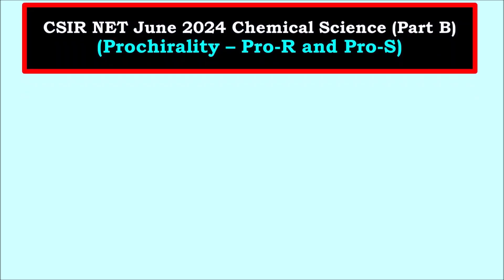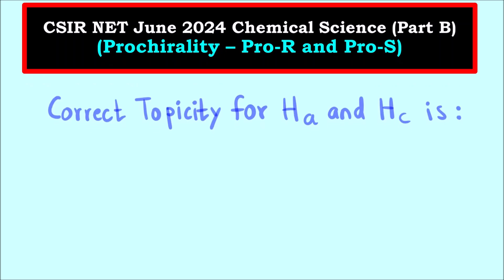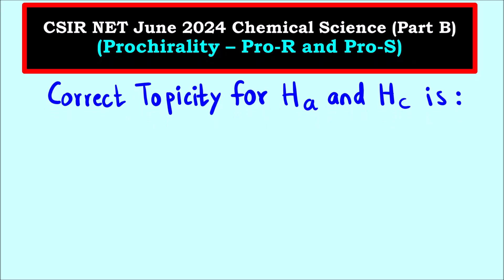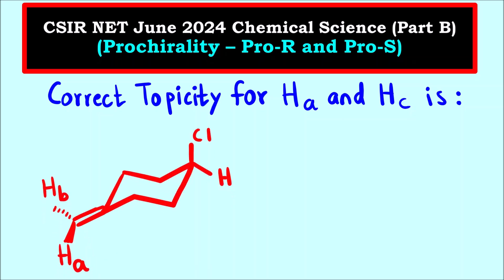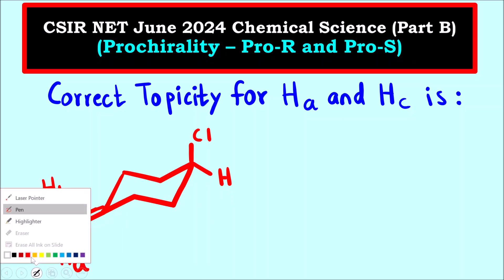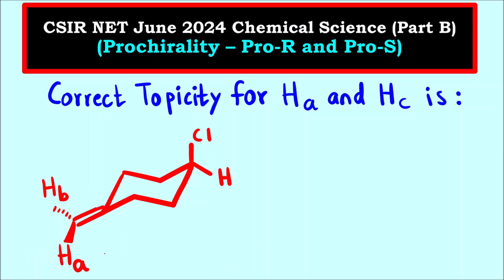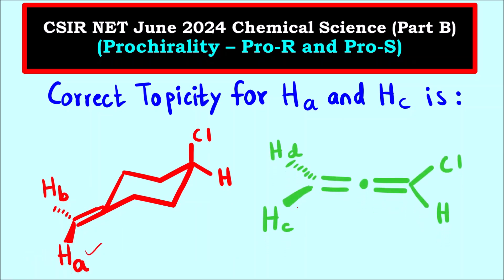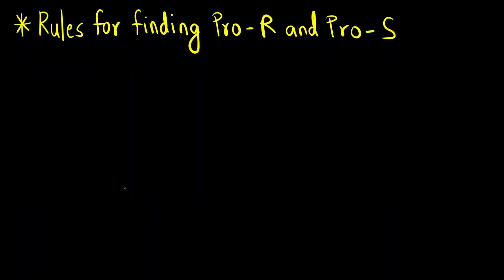Welcome to Complete Chemistry. In today's video we are going to start solving questions from the recently asked June 2024 NET exam, starting with Part B. This is the first question from organic chemistry, which is based on pro-chirality — we have to assign whether a particular group or atom is pro-R or pro-S. The question asks for the correct topicity for HA and HC.